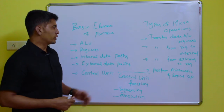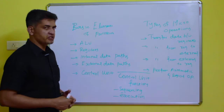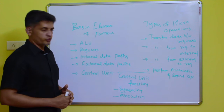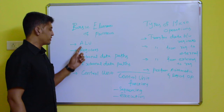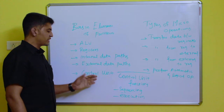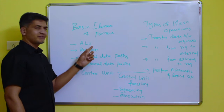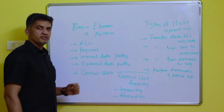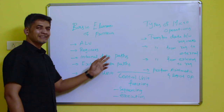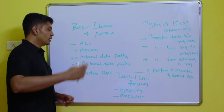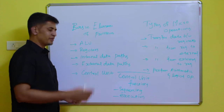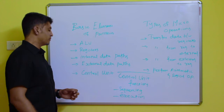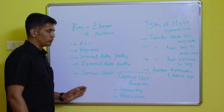Hi friends, in this video we are going to discuss three things. The first one is the basic elements of a processor. These basic elements are: the ALU (arithmetic and logical unit), the register and internal data path from external memory, the external data path from external to internal memory, and lastly the control unit.